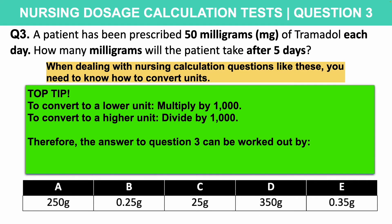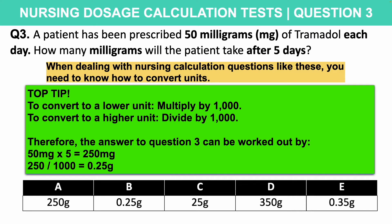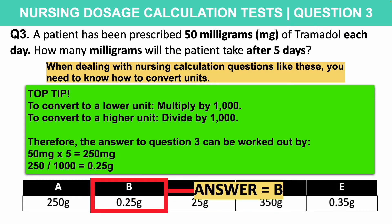For question three, we do 50 mg times 5 days, which equals 250 milligrams. We then divide 250 by 1000, which gives us 0.25 grams. So the correct answer option was B: 0.25 grams. Well done if you got that right.